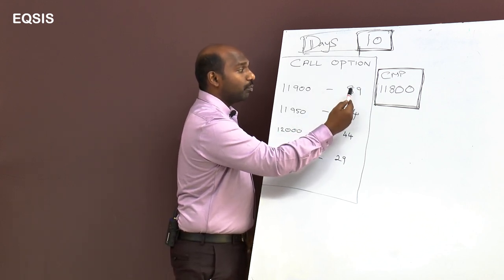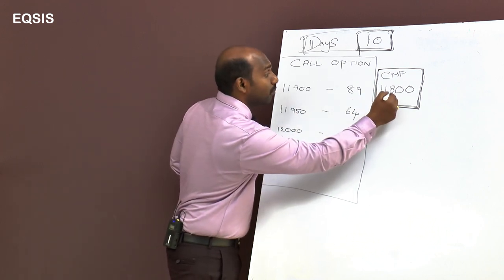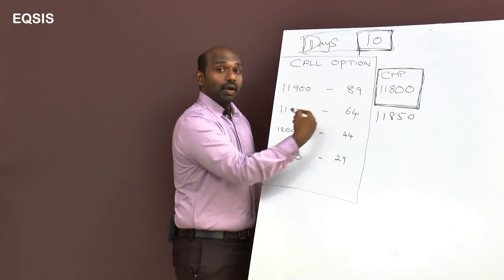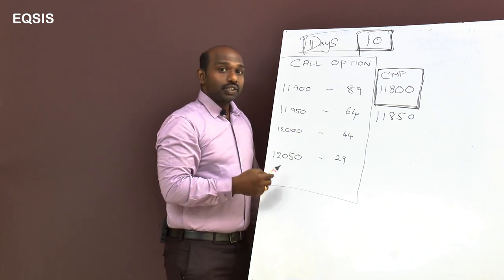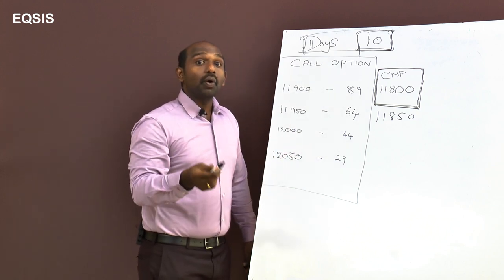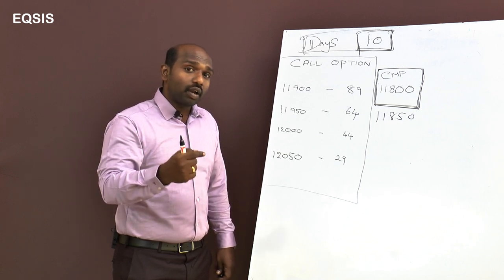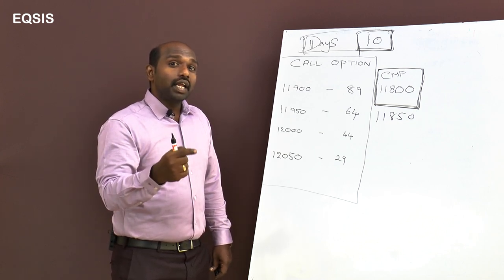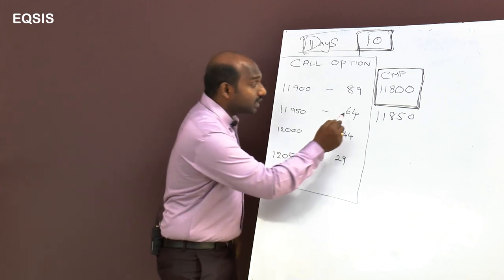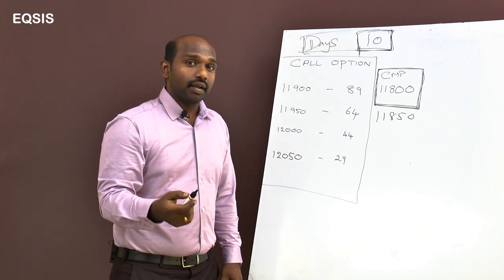Since 11900 is 100 rupees away from 11800 and trades at 89, if the market moves to 11850, then 11950 also becomes just 100 rupees away. So this 11950 strike's premium of 64 would move closer to 89 — provided the move happens instantly. But if it happens by tomorrow, with only 9 days remaining, the premium may not be exactly 89.